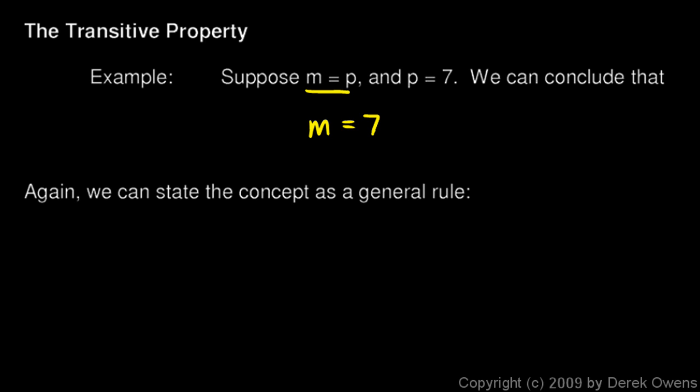If m is equal to p, so m has to be the same value as p, and we're told that p is 7, then m also has to be 7. This idea can be stated as a general rule using variables, and we'll state it like this.